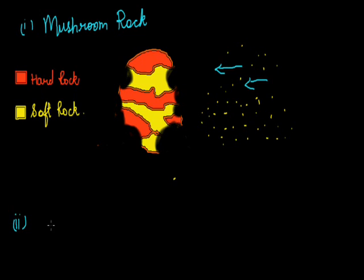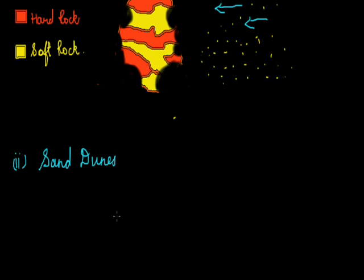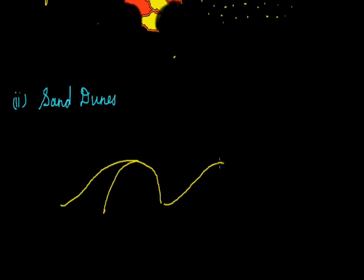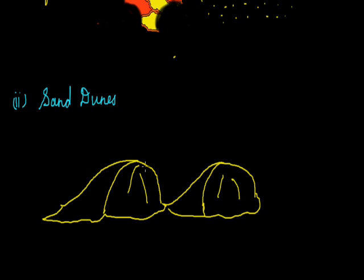The second kind of depositional work the wind does is sand dunes. We are all aware that in desert areas there is coarse soil, known as sand, and these sand particles blow with the air because the wind blows too much. They get collected at one place, leading to the formation of sand dunes. Sand dunes are very unique formations — they are not stable, they keep on moving with the movement of the air, flowing off with the wind and finding a new place.